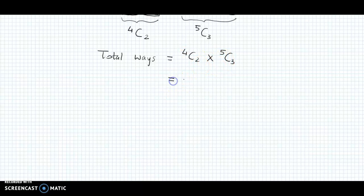Now if we simplify this further we obtain 4 into 3 upon 2 into 1 times 5C3, which could be written as 5 into 4 into 3 upon 3 into 2 into 1. So if we simplify this, we get 6 into 10. The final answer is 60, so the committee could be formed in 60 different ways.